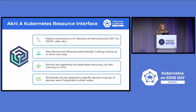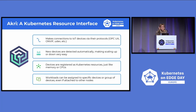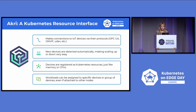These devices will be exposed as Kubernetes resources on your cluster, just like memory or CPUs, and the Akri brokers will allow you to use the signal from these devices in your applications. Workloads can be assigned to specific devices or groups of devices, even if attached to other nodes, so you can get direct signal by running on the node closest to the device, which eliminates latency. If a node or cluster goes down, the others can continue to pick up the work. Akri makes it easy to deliver containerized workloads for IoT devices without coding for each specific camera.